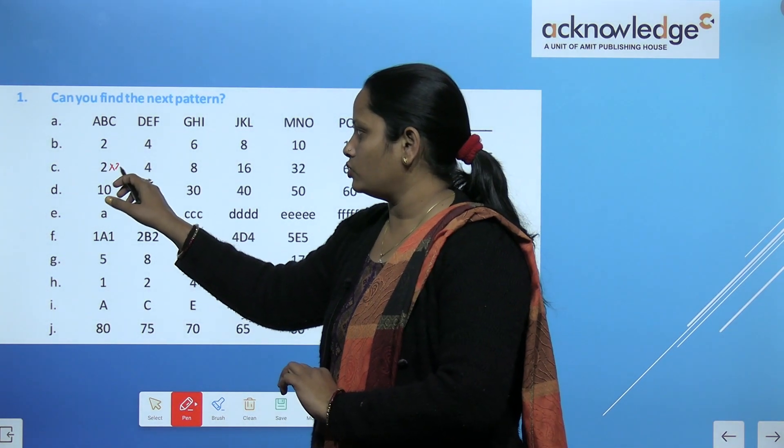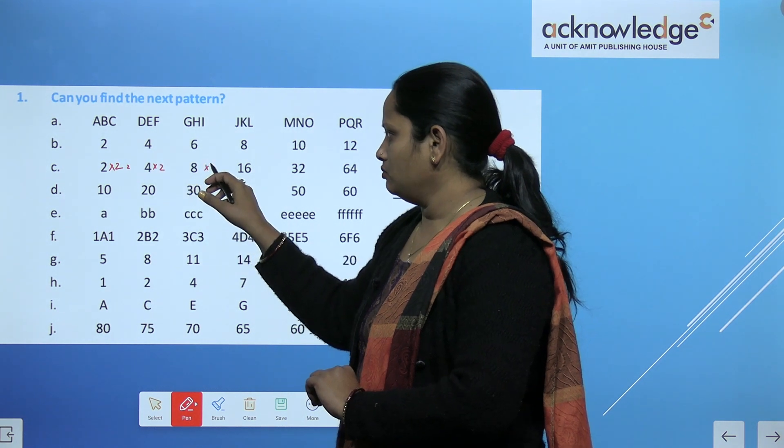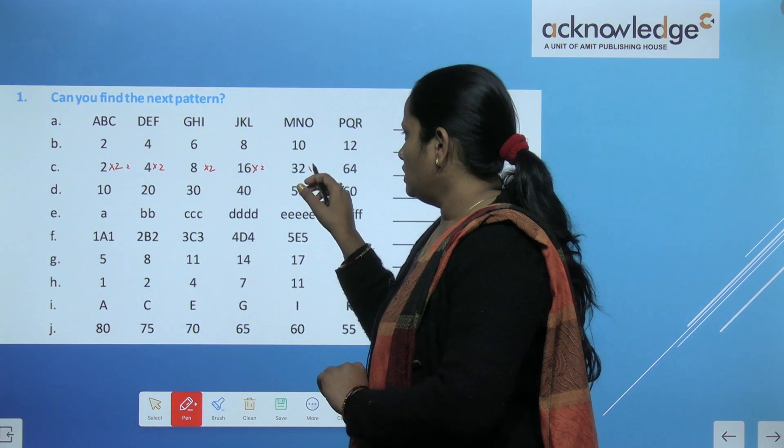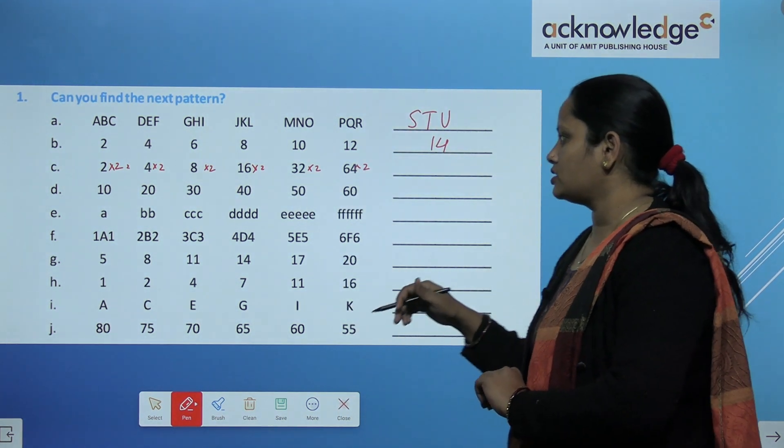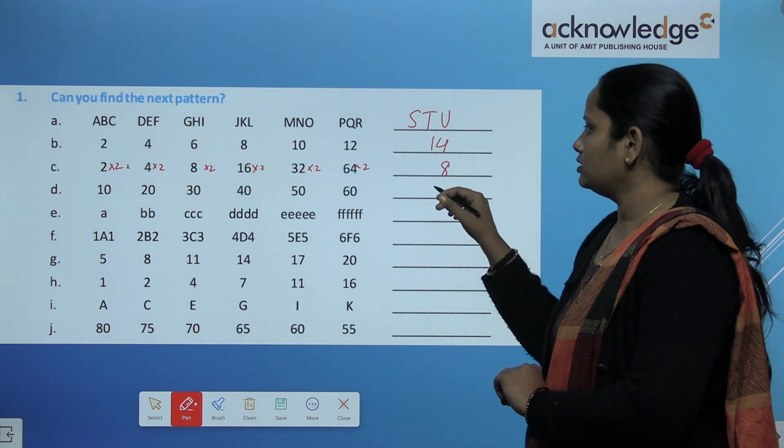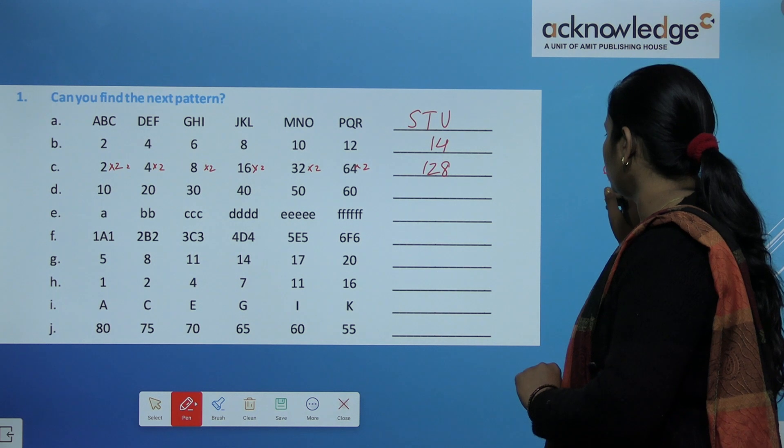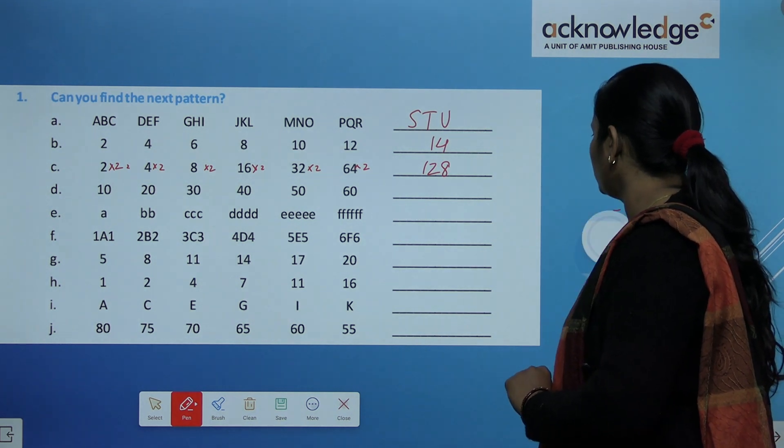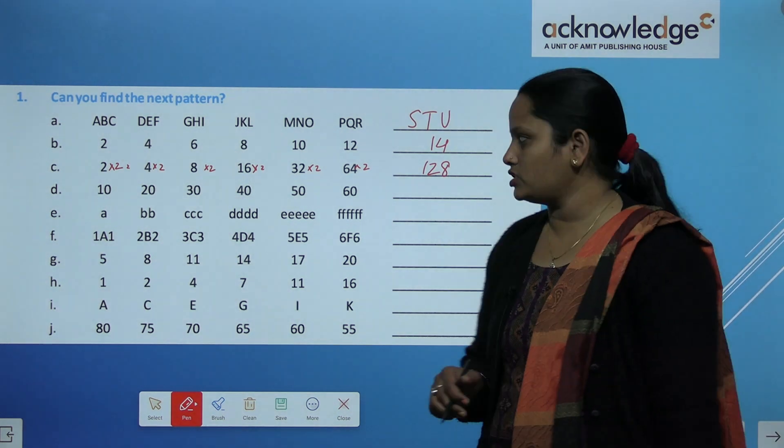So we have to multiply 2. It's 4, multiply 2 is 8, multiply 2 is 16, multiply 2 is 32, multiply 2 is 64, and 64 multiply 2 is 128. Clear? So like this, we have to do the rest questions.